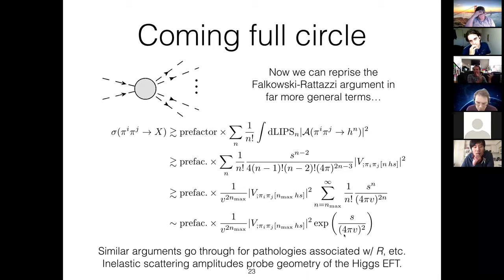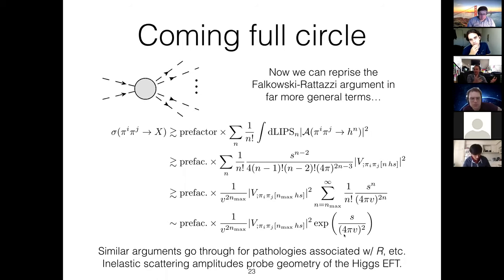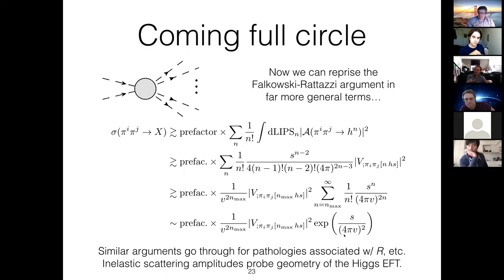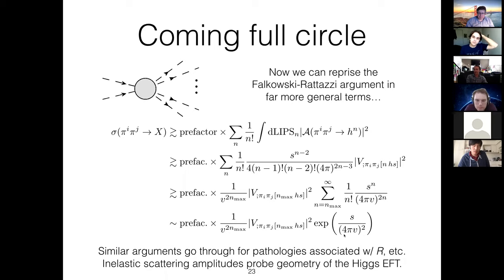The picture I'd like to convey is: all those scattering amplitudes are only probing the local geometry of the EFT, but these inelastic processes — sums over scattering amplitudes into any multiplicity of final states — once you sum over all of them, they are in some sense probing more globally the structure of the geometry. In this case, it's unitarity violation picking up the singularity associated with the O(4) invariant fixed point.